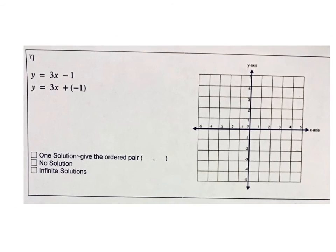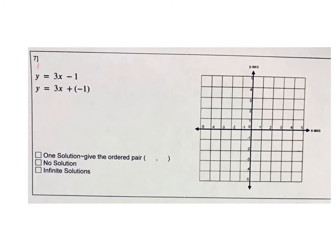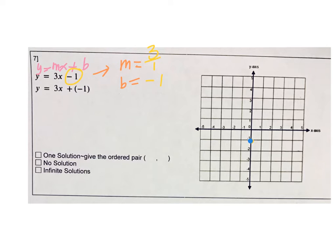Our next one — begin the same way with Y equals MX plus B. Let's pull out M and B. The B is negative 1, and our slope M is 3, which we write as 3 over 1. Begin at negative 1 and put a point. Rise 3 and run 1 to put the next point. Do it again — rise 3, run 1. Reverse: down 3 and back 1. Connect all of those to make the line.